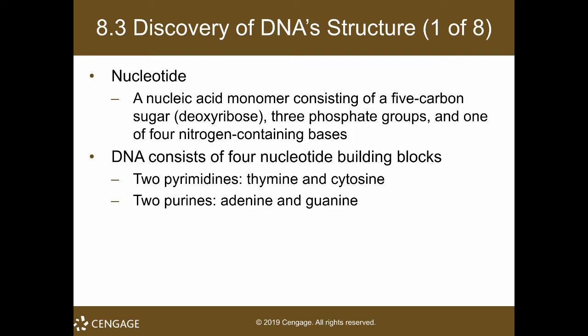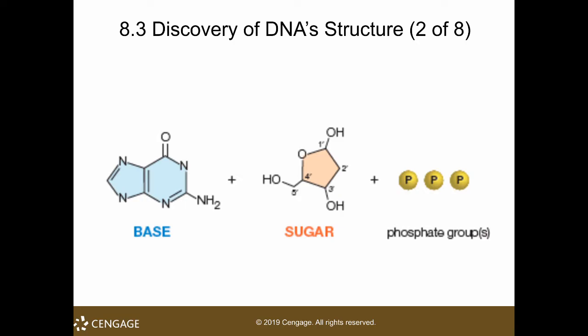A nucleotide is a nucleic acid monomer consisting of a 5-carbon sugar (deoxyribose), 3 phosphate groups, and one of 4 nitrogen-containing bases. For DNA, we have 4 nucleotide building blocks: 2 pyrimidines — thymine and cytosine — and 2 purines — adenine and guanine. Since it is called deoxyribose, there is no hydroxyl group at the second carbon position, only hydrogens.